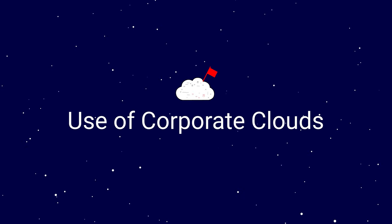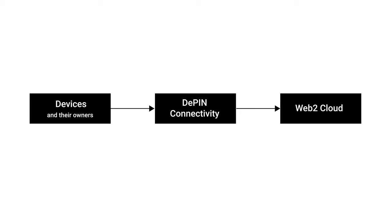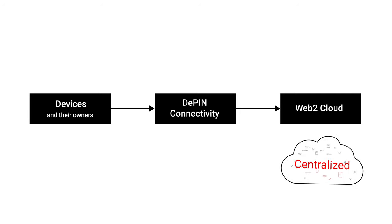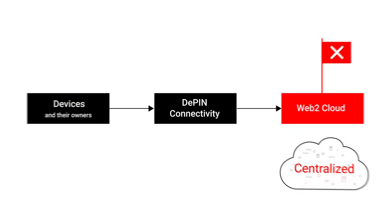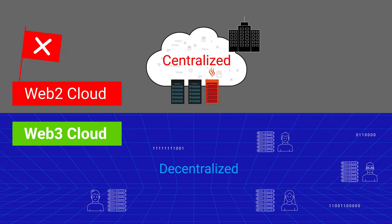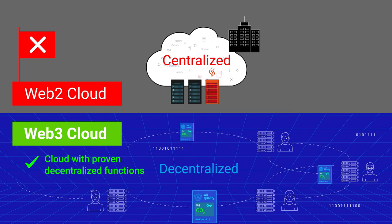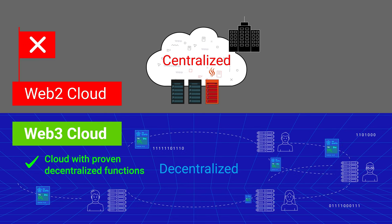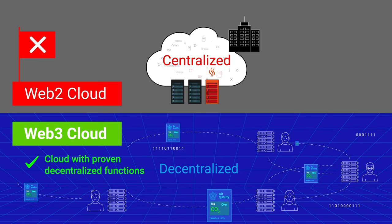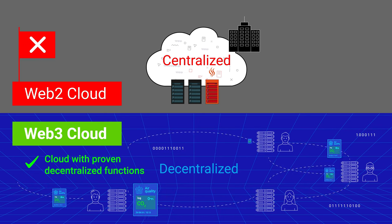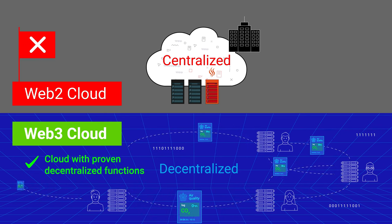Use of Corporate Clouds. Another red flag for DePIN is if a corporate cloud is used when working with device data. The handling of data should occur exclusively using Web3 cloud, whose decentralized functions have been clearly demonstrated.